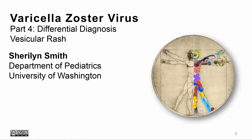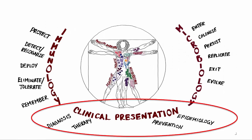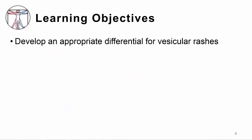Hi, this is Sherilyn Smith from the University of Washington, and in this video we're going to be talking about the differential diagnosis of vesicular or blistering rashes. This is the learning objective: to develop an appropriate differential diagnosis for vesicular rashes.